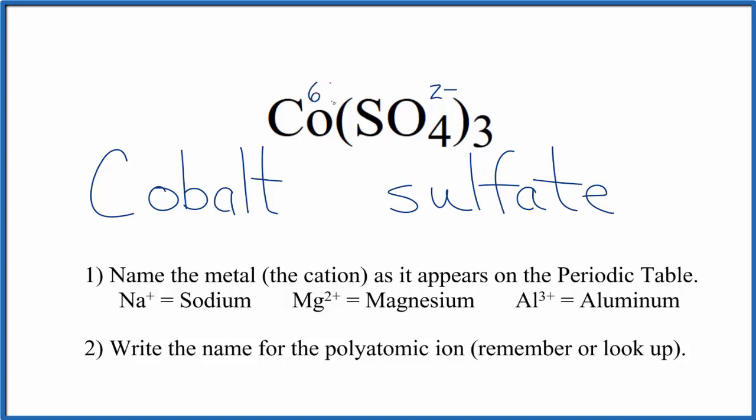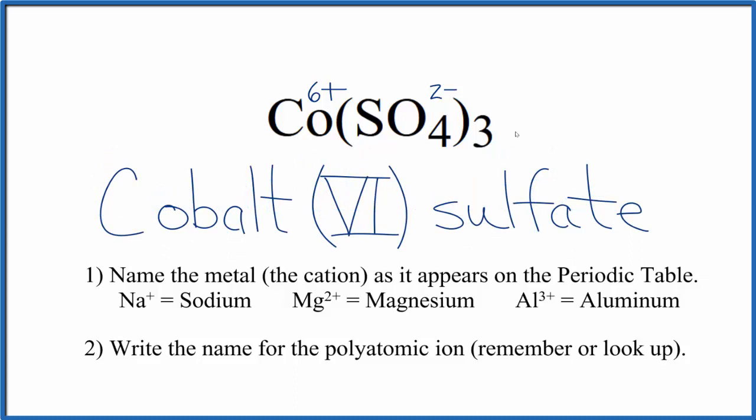The cobalt has to be 6 plus. We're going to put the Roman numeral 6 here in parentheses between the names. So, the name for Co(SO4)3 is cobalt 6 sulfate.